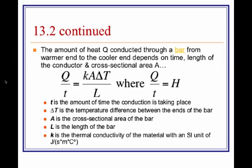Q over T is given as H, which is the rate of heat transfer. The AP exam formula sheet gives it as H = KA(ΔT)/L. The textbook uses Q = KA(ΔT·t)/L, where t is time. So there are two different usages of the formula, same idea: H is the rate of heat transfer, and Q is the total heat transferred through a long object with cross-sectional area A, length L, and a temperature difference ΔT between the two ends.